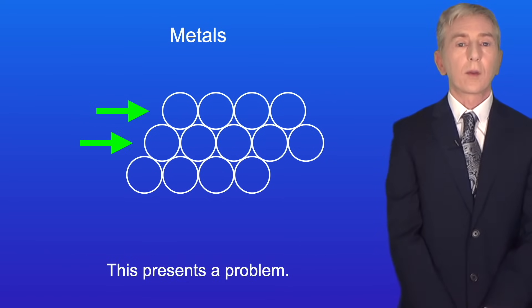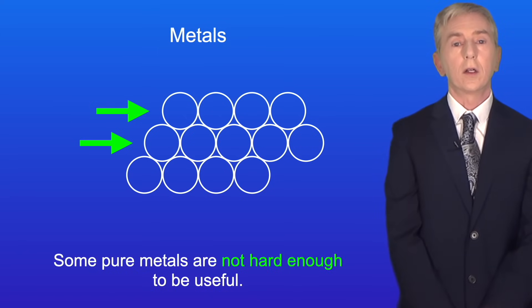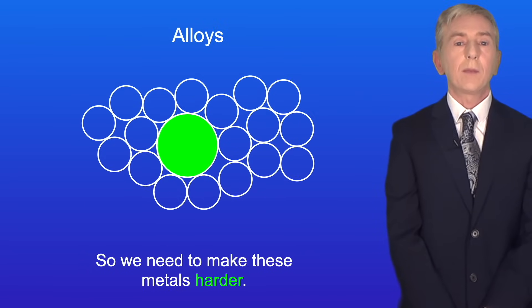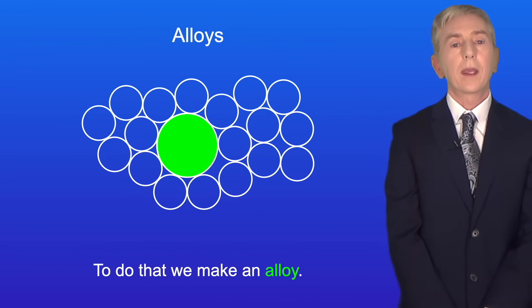Now this presents a problem. Some pure metals are not hard enough to be useful. This includes copper, gold, iron and aluminium. So we need to make these metals harder and to do that we make an alloy.